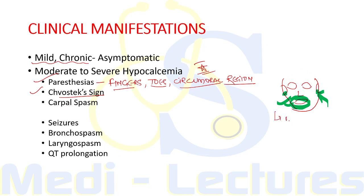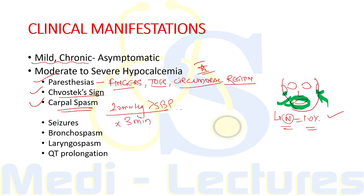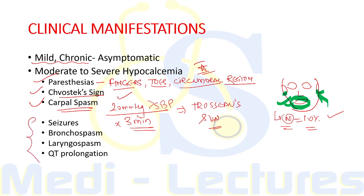It is important to note that Chvostek's sign is normally present in 10% of normal individuals. Another sign is carpal spasm — Trousseau's sign — which occurs when we inflate the BP cuff 20 mmHg above the patient's systolic BP for three minutes, producing carpal spasm. Severe hypocalcemia can also result in seizures, bronchospasm, laryngospasm, and QT prolongation on ECG.